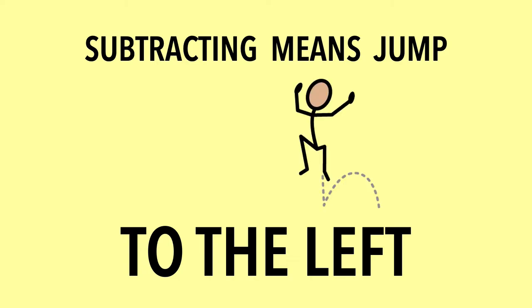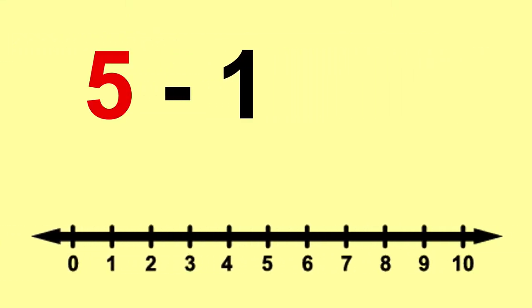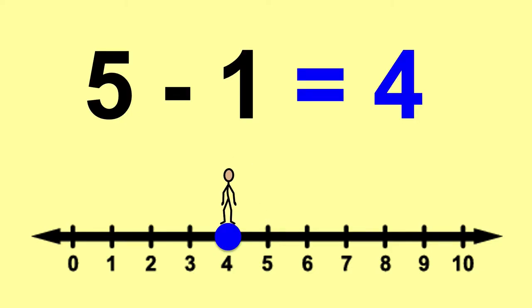Subtracting means jump to the left. Start on 5, then jump 1 to the left. 5 minus 1 equals 4.